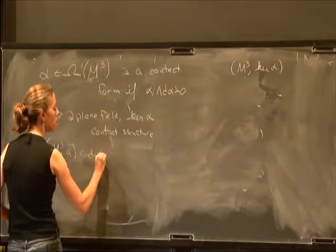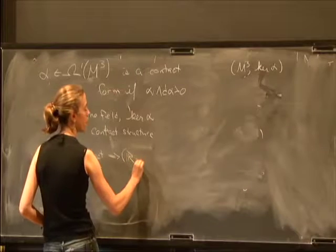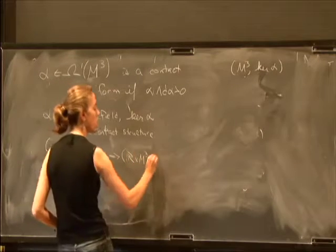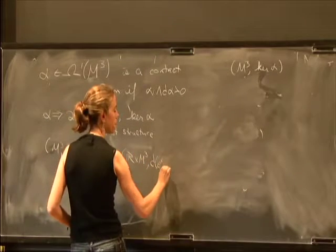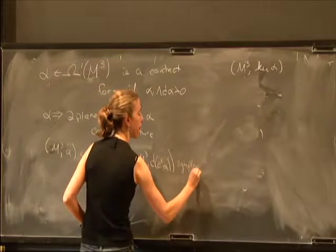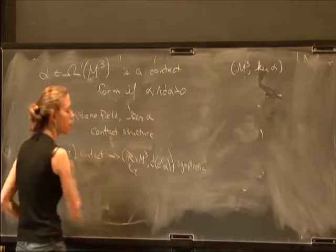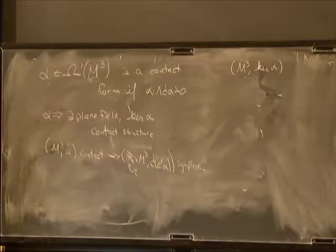then you immediately get a symplectic manifold by taking the four-manifold R cross M3 with the two-form d(e^t alpha), where here the t is just giving you the R parameter.